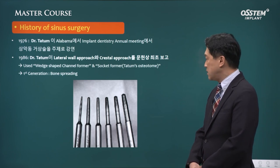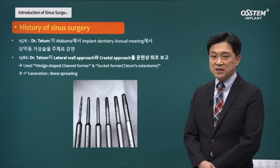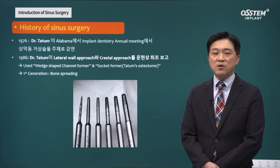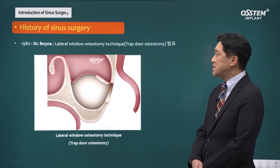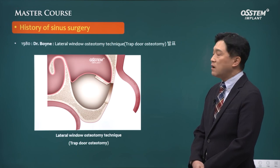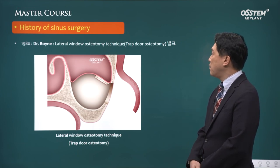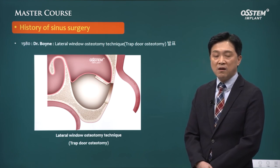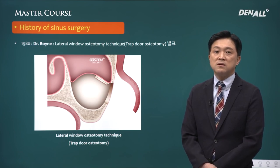At the time osteotome was used, bone spreading or sinus floor elevation was performed. In 1980, Dr. Boyne introduced the lateral window osteotomy technique and talked about how to do graft. He announced tractor osteotomy, and many advancements have been made since.